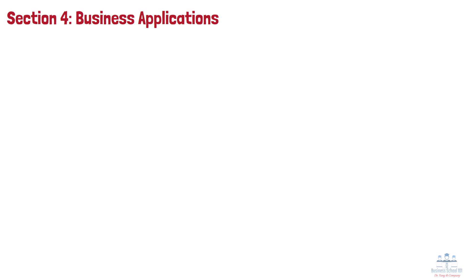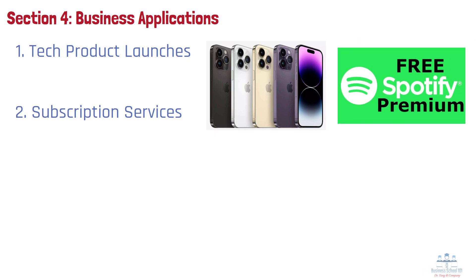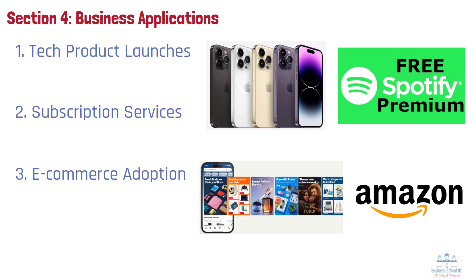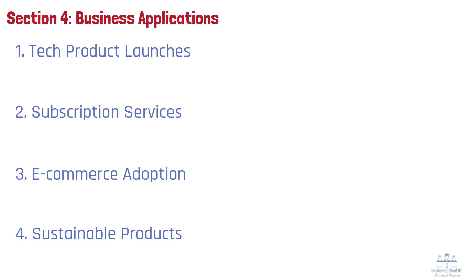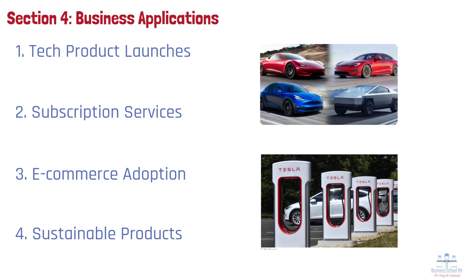Section 4: Business Applications. Let's look at how innovation diffusion theory can be applied in real-world business scenarios. Number 1: Tech Product Launches — companies like Apple often target early adopters with sleek design and premium pricing, then scale to the early majority with feature updates and broader availability. Number 2: Subscription Services — Spotify used trialability by offering free versions with limited features, lowering the barrier to adoption. Number 3: E-commerce Adoption — Amazon's early growth relied on making online shopping simple, convenient, and visible through customer reviews. Number 4: Sustainable Products — Tesla initially targeted innovators and early adopters excited about electric vehicles, then captured the early and late majority by showcasing real-world value as charging networks and range improved.